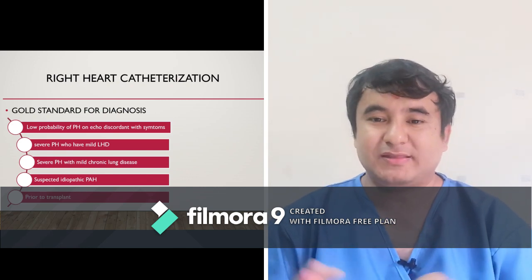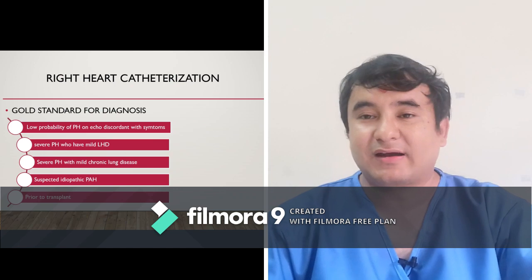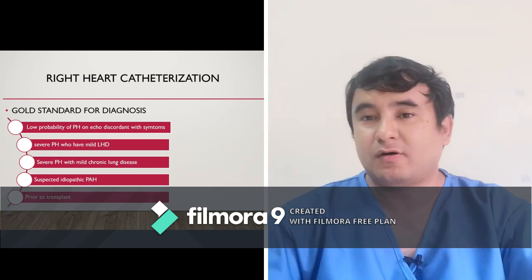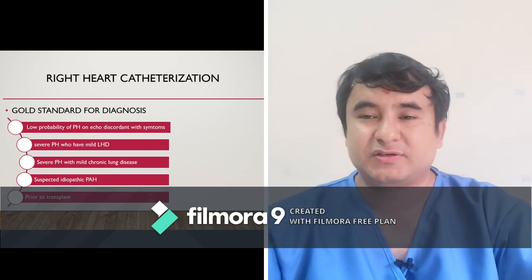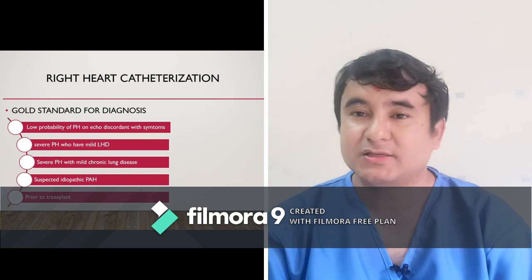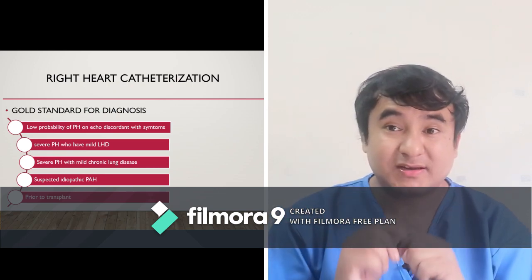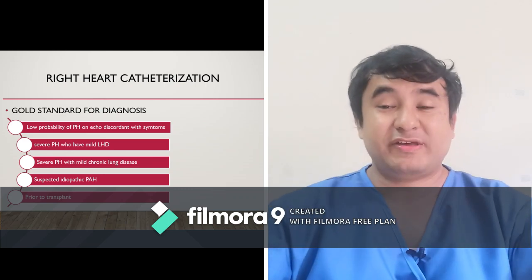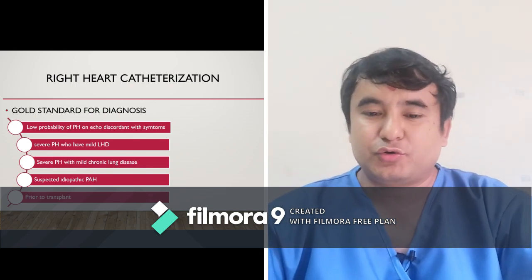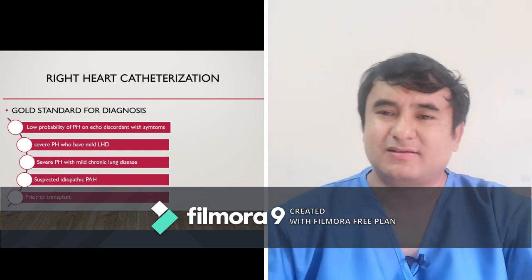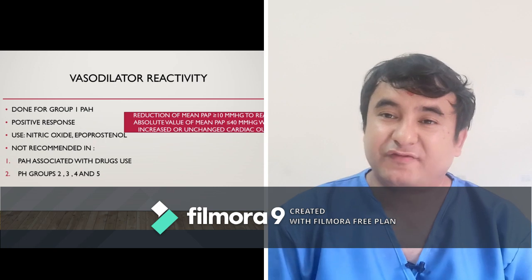Right heart catheterization is the gold standard for diagnosis of pulmonary hypertension and is performed at centers with a cath lab, including BPKHS. However, it is not required for every patient. For example, in a patient with severe COPD, it may not be necessary. It is necessary when symptoms are discordant — such as mild COPD but severe pulmonary hypertension — or when idiopathic PAH is suspected, or when transplant planning is being considered.